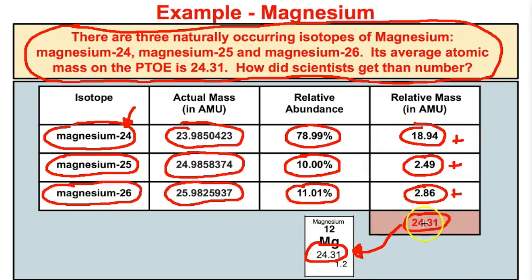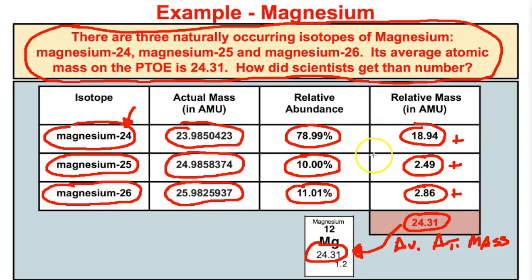This is the average atomic mass. The average atomic mass, once again, is the average of all known isotopes of that element multiplied by their relative abundance. Let's go ahead and take a look at another example where we actually calculate the average atomic mass of a newly discovered element.